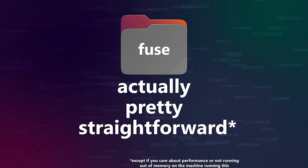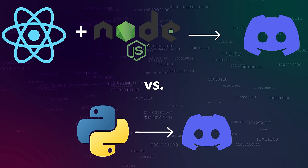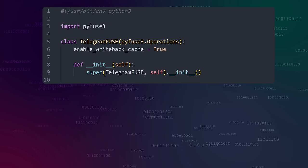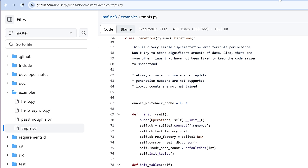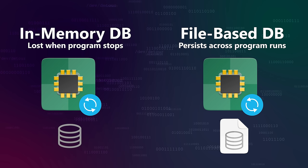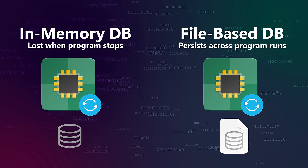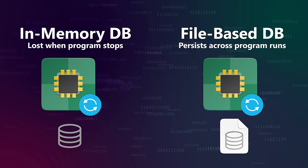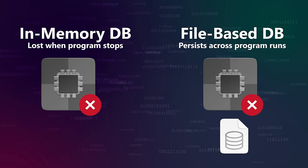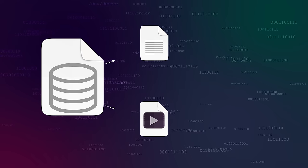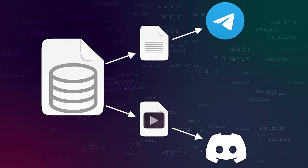Doing it this way is actually pretty straightforward — much more so than writing a whole server and client like I did before. I really wish I'd known about this back then. All we need to do is extend the base FUSE client object and implement the methods for reading, writing, and getting stats about the file. I'm starting with the in-memory database example from the PyFUSE3 repo. We only need a few modifications: move from an in-memory database to a file-based one so we can persist the file system across mounts, and add a table to track Telegram or Discord message IDs for the attachments that make up our files.